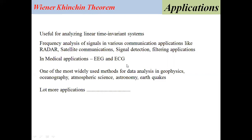In medical applications, we have EEG and ECG signals. A person's health analysis depends on EEG and ECG signals. There is a standard form of EEG, and if a patient's EEG matches the standard form, there are no abnormalities. If it does not match, there may be some abnormalities. Spectral analysis is also used for data analysis in geophysics, oceanography, atmospheric science, astronomy, and earthquakes.